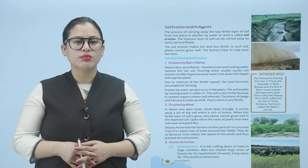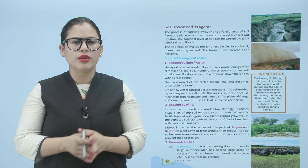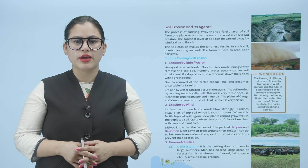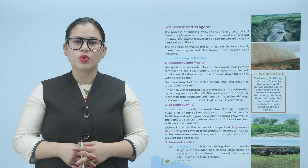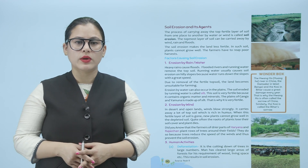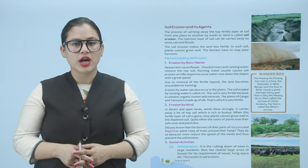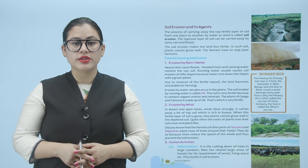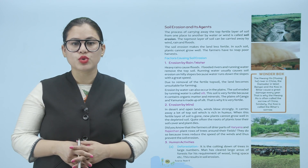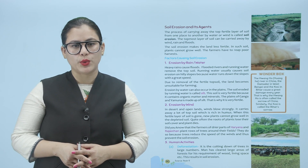Next is erosion by wind. In deserts and open lands, winds blow strongly and carry away a lot of topsoil which is rich in humus. When the fertile layer of soil is gone, new plants cannot grow well in the depleted soil. Quite often the roots of plants lose their soil cover and the plant dies. Did you know that the farmers of drier parts of Haryana and Rajasthan plant rows of trees around their fields? They do so because trees reduce the speed of the winds and thus prevent soil erosion.